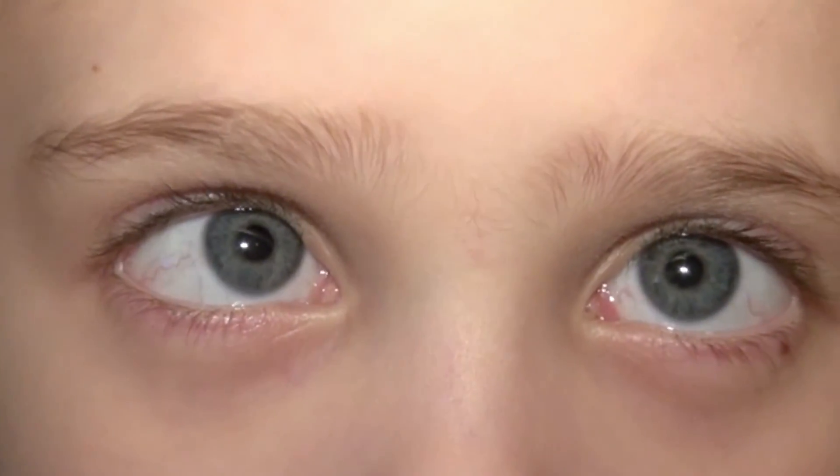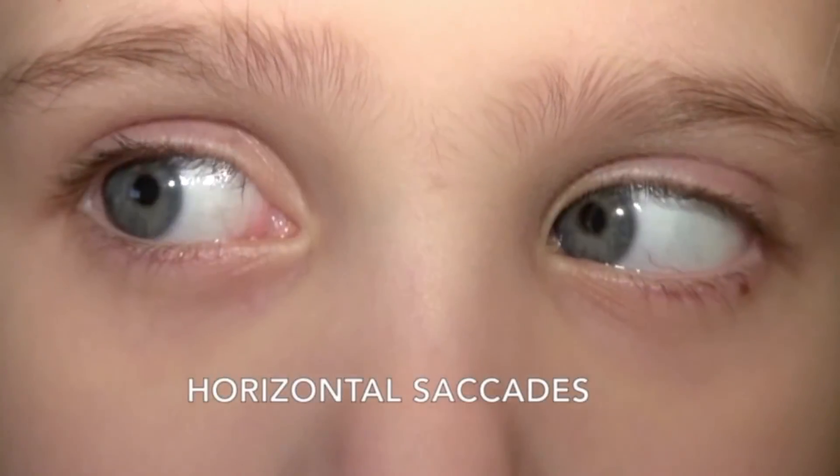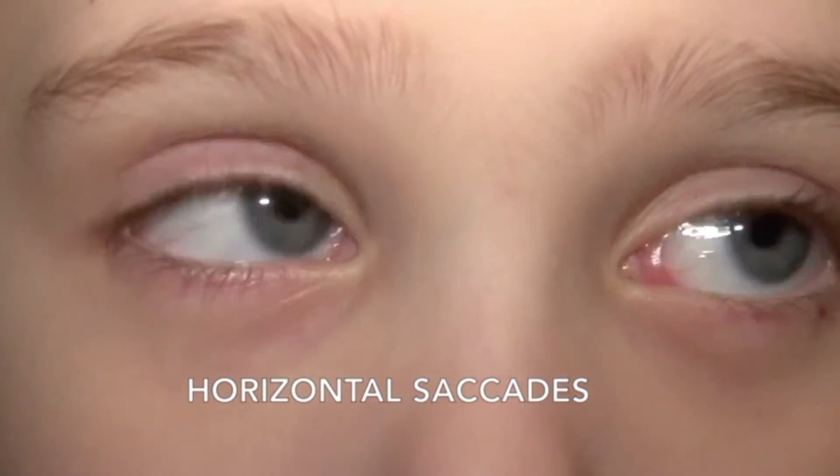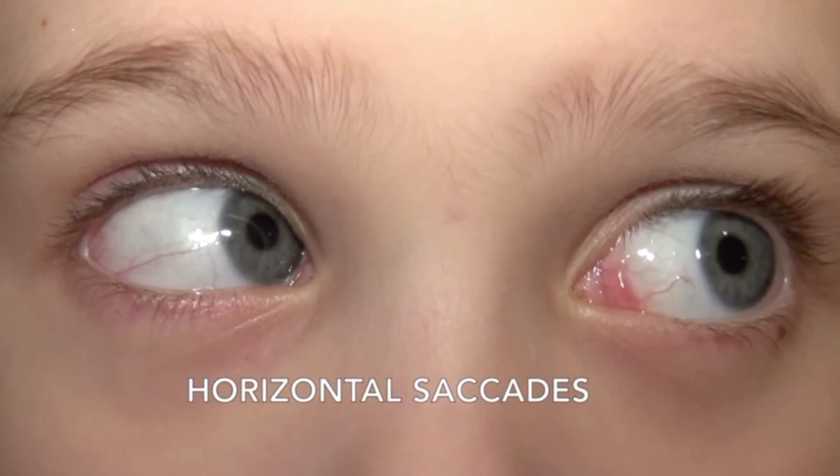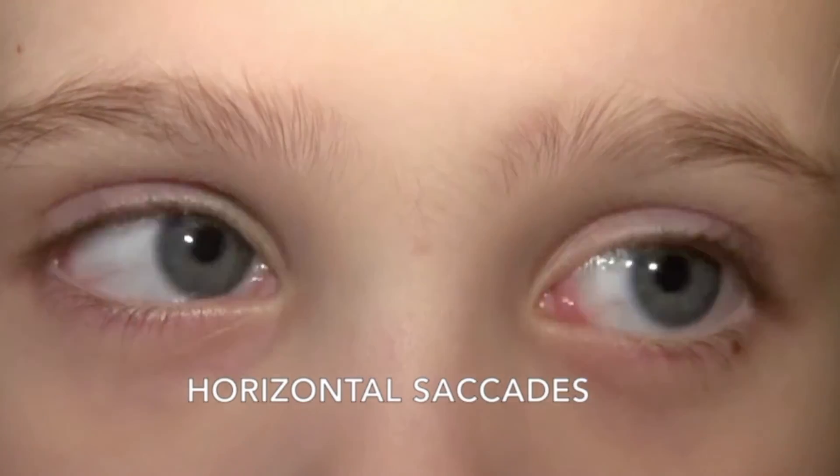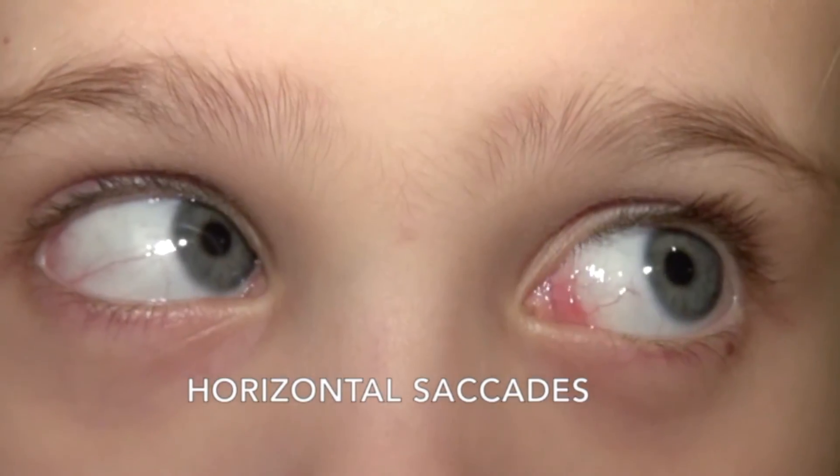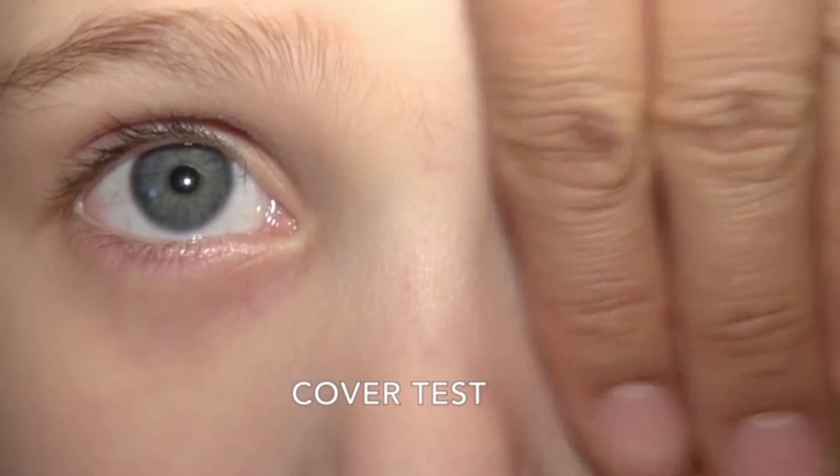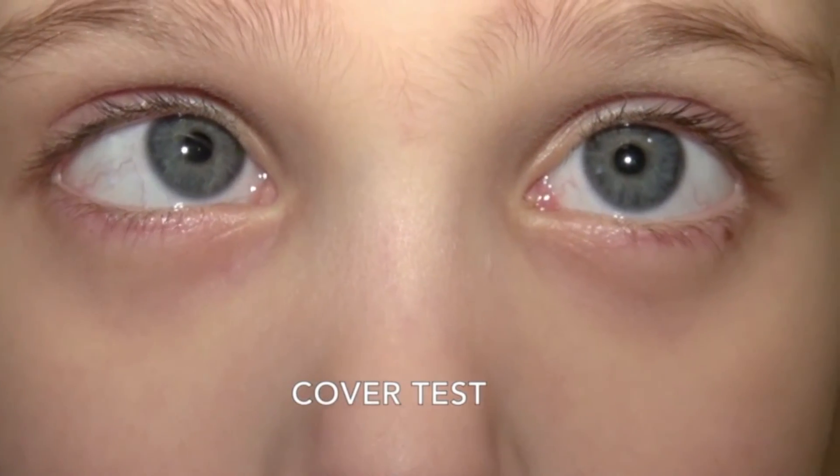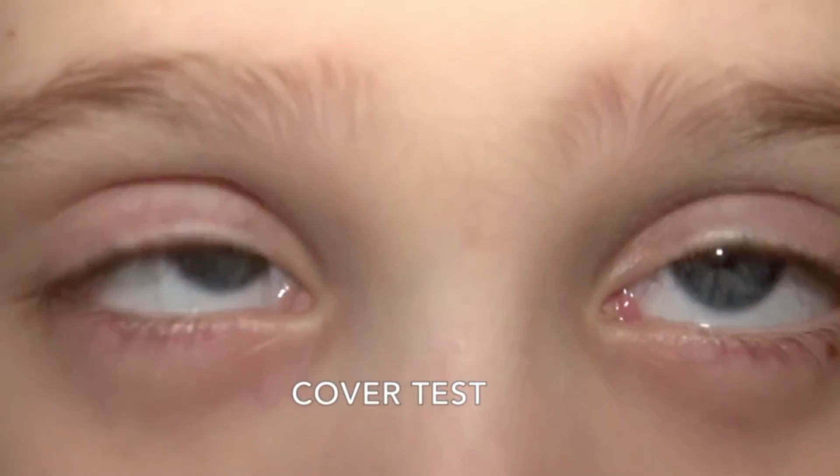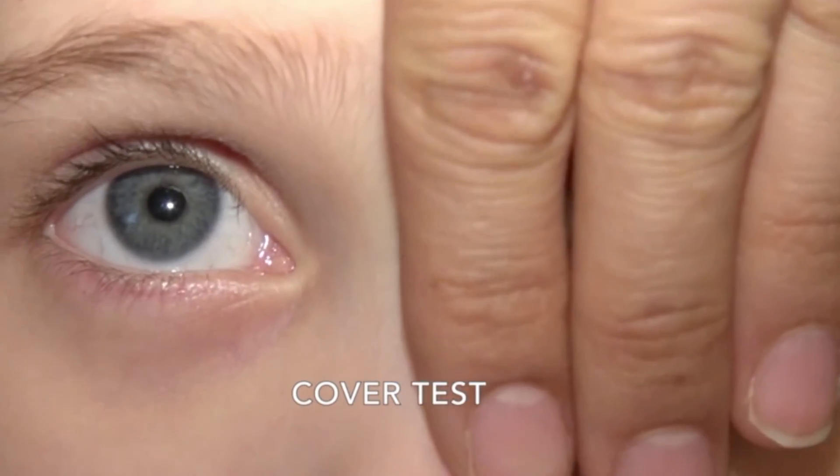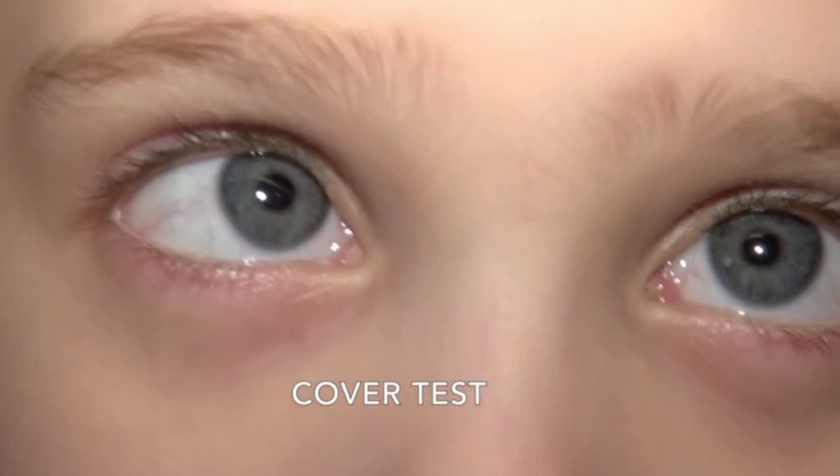This patient complains of new diplopia. He has full eye movements, but his eyes are clearly out of alignment in the esotropic direction. Cover testing confirms the esotropia by revealing outward fixational movements of the uncovered eye. In this patient, the cause was encephalitis.